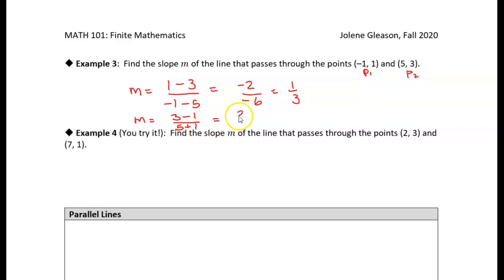So in this case, I get a positive two over six, which is still one-third. Either way, I get the same slope. It doesn't matter which point you use first. You just have to be consistent between the numerator and the denominator.